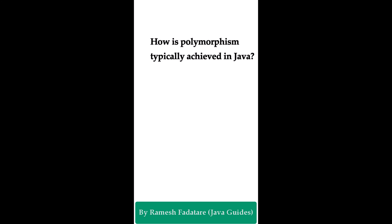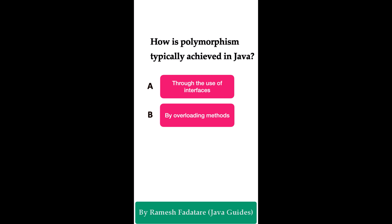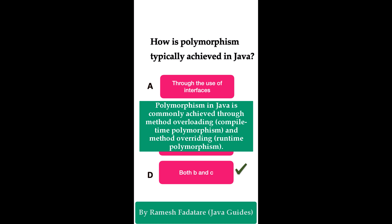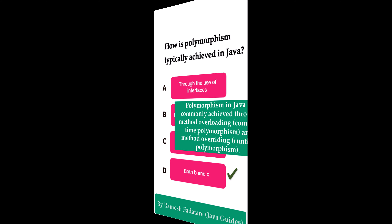How is polymorphism typically achieved in Java? Option A: through the use of interfaces. Option B: by overloading methods. Option C: by overriding methods. Option D: both B and C. The correct answer is option D — both B and C. Polymorphism in Java is commonly achieved through method overloading (compile-time polymorphism) as well as method overriding (runtime polymorphism).